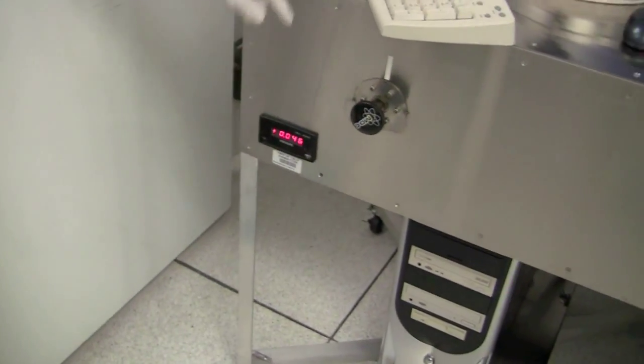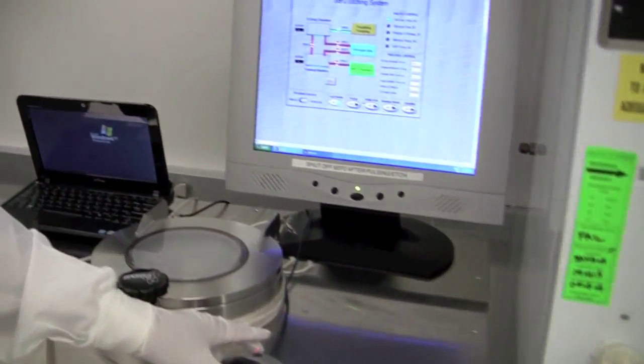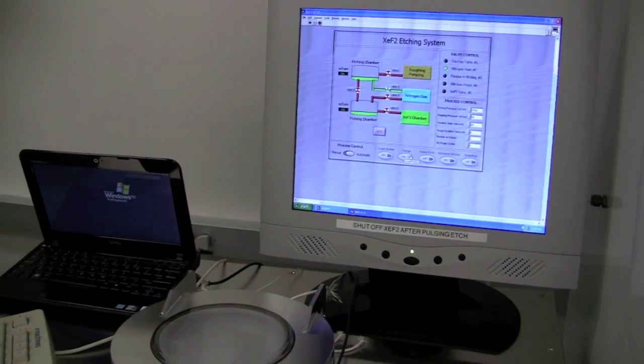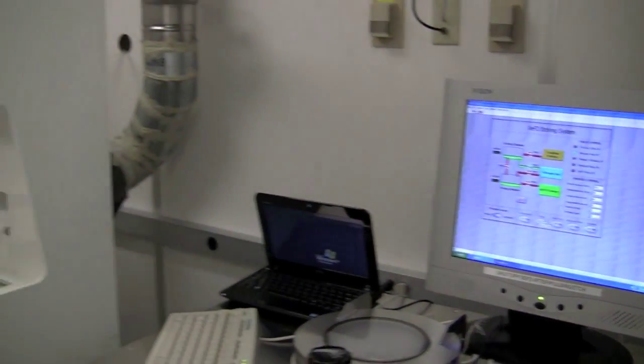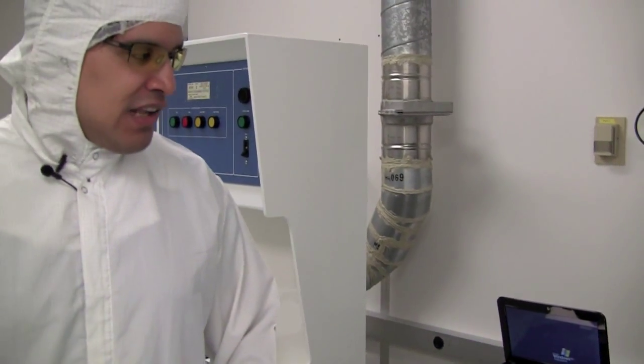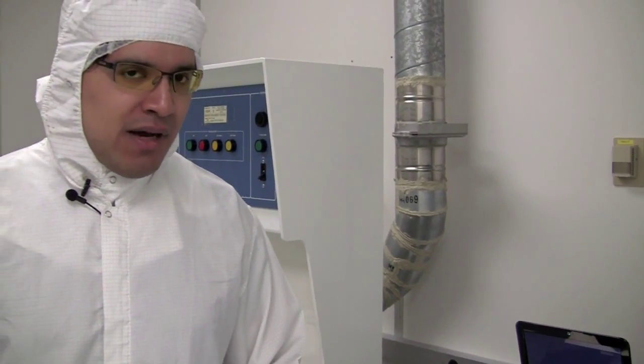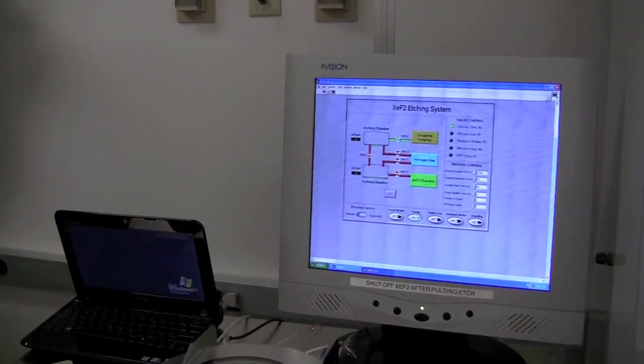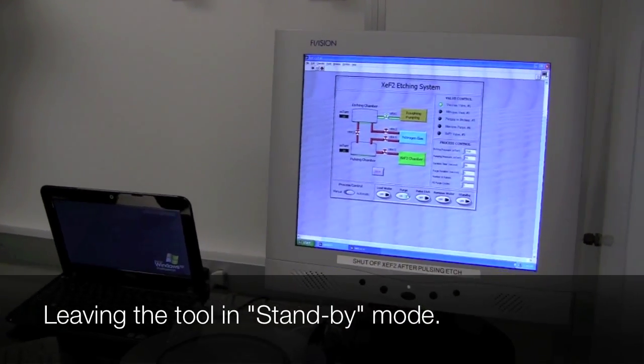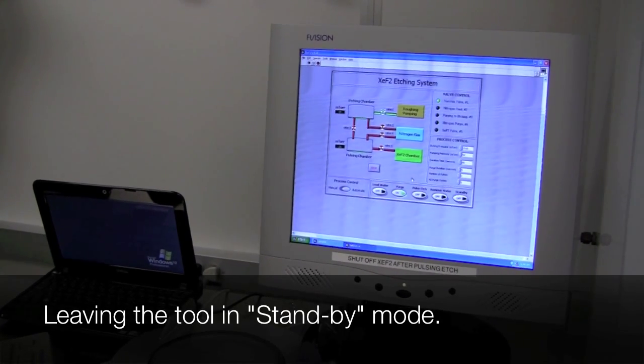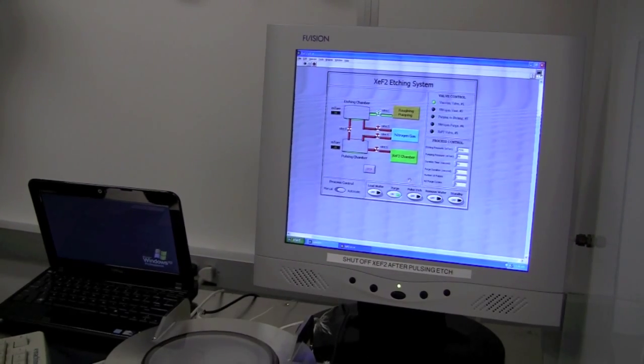As you can see, our chamber has already dropped below 50, so we'll just hit purge again. I like to purge in case there's any moisture that got in the chamber, just to get it out. But technically you can just hit standby, but I like to practice purging. Once it's done purging, and everything has been cleaned up, the bottle is closed, you filled the logbook, and everything is done, you can hit standby.